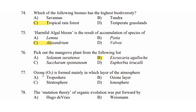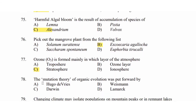Question 77: Ozone is formed mainly in which layer of the atmosphere? A very easy question. Option A: stratosphere. Option B: ozone layer. Option C: stratosphere. Option D: ionosphere. The answer is Option C: stratosphere.